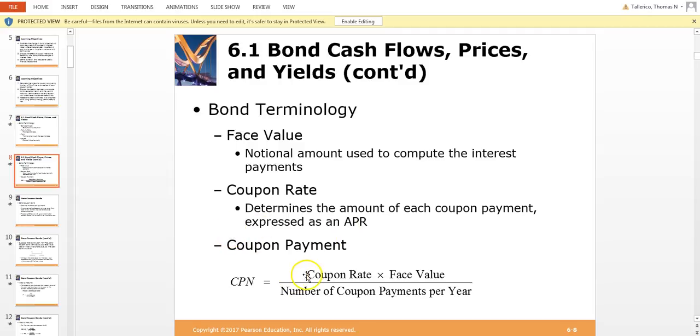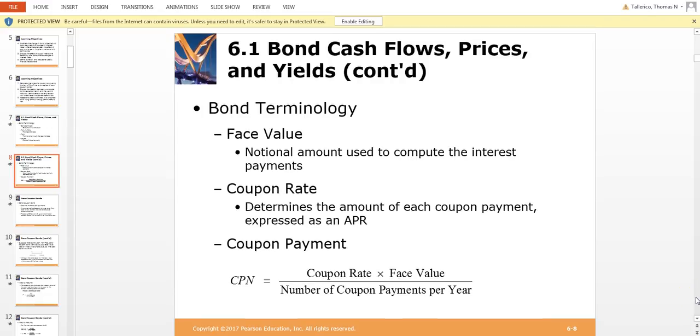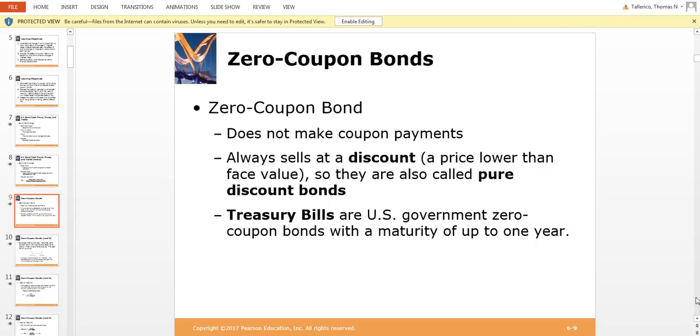And if it's going to pay coupons every six months, you divide it by two in this case. So that'll give you how much you're going to receive in dollars every six months.